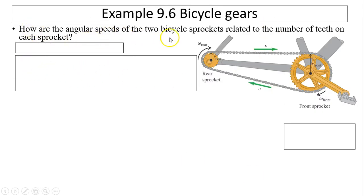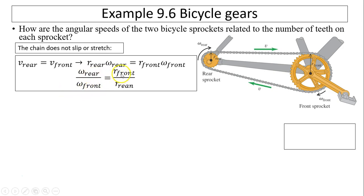Next example. How are the angular speeds of the two bicycle sprockets related to the number of teeth on each sprocket? Everybody rides bikes. For when you grow up, you probably have a multi-speed bike. That means you have different gears that you can switch. First, we know the chain does not slip or stretch. The chain must mesh each gear at the same speed. What does that mean? That means the V for the rear has to be the same as V on the front. So V_rear has to equal V_front. R_rear times omega_rear has to be R_front times omega_front. Then omega_rear over omega_front has to be R_front over R_rear.